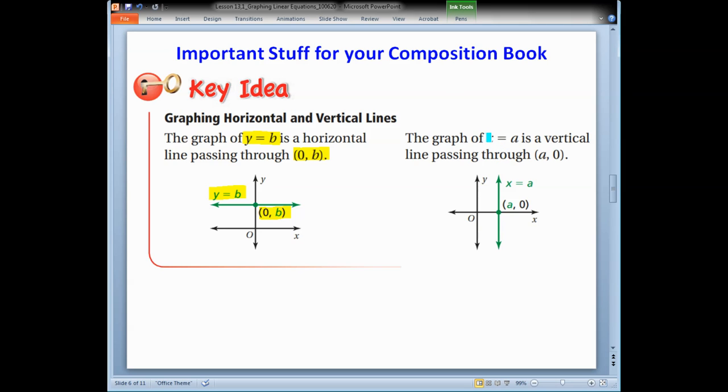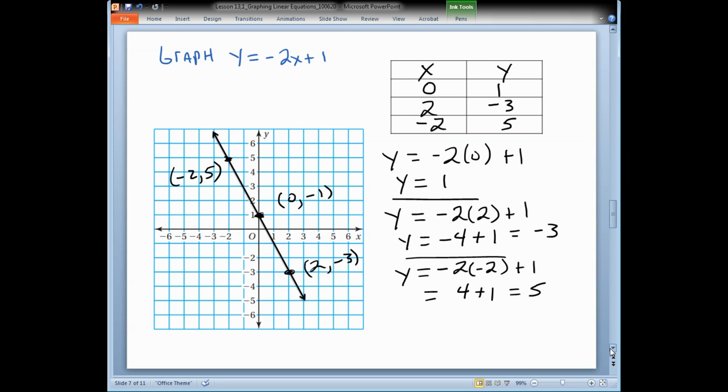For vertical lines, we use the equation x equals a. And if x equals a, then y can be anything. So if y equals b, then x can be anything. So that's why that's a horizontal line. And that's why x equals a represents a vertical line. I plot that point. So if x equals 2, then the coordinate would be 2, 0. I plot that point and draw a vertical line.